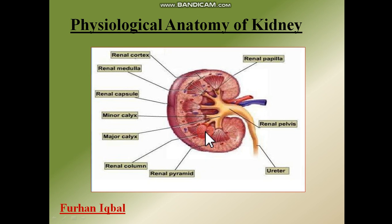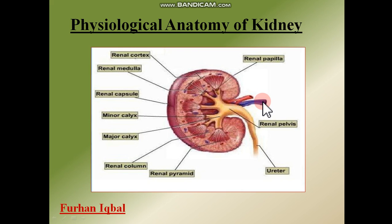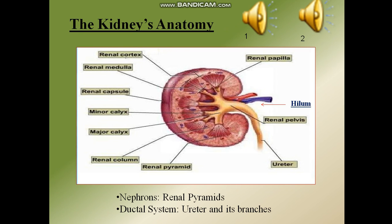These are the renal pyramids, this is the renal column, and this is the renal pelvis. Two vessels are visible here: the first one in red is the artery, showing that oxygenated blood is present. The vessel shown in blue represents deoxygenated blood — meaning blood with less oxygen. Deoxygenated does not mean blood without oxygen; it means blood with less oxygen.